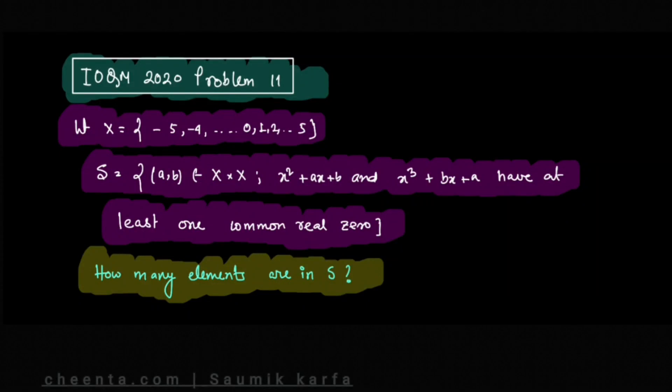Today we will talk about polynomials and their roots or zeros using problem 11 from IOQM 2020. This problem says that x is a given set of integers from -5 to +5. S is another set consisting of ordered pairs (a,b) such that x² + ax + b and x³ + bx + a have at least one common real root or zero. How many such ordered pairs are there in S?